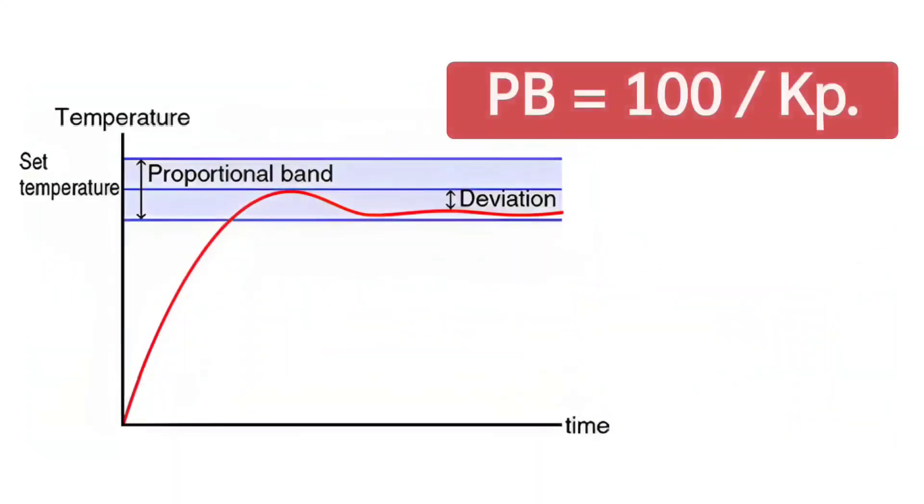PB is equals to 100 divided by Kp. Meaning, 20 is equals to 100 divided by Kp.